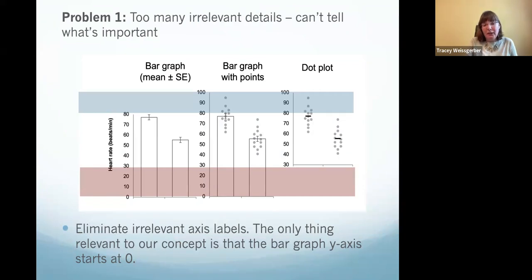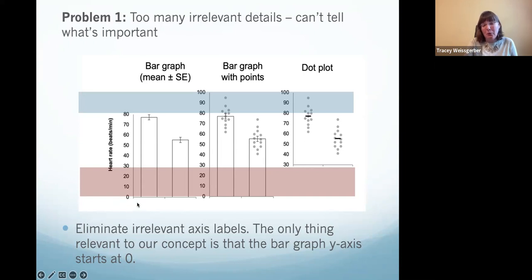The first thing I needed to do was eliminate everything irrelevant. This is an infographic, not a data figure — if it were a data figure, I would never eliminate the y-axis labels. But for this infographic, it does not matter what variable I'm measuring or the scale. What will be important to making my point is that the y-axis of the bar graph starts at zero. So that's the only thing I need to keep; everything else on the y-axis labels can be deleted.